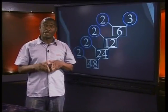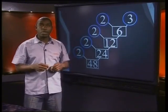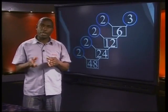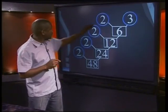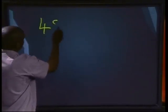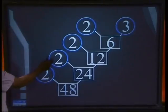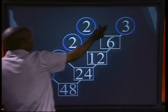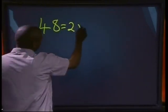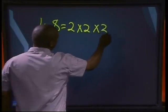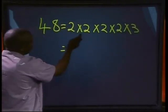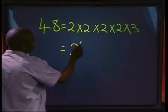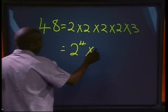All the prime numbers are placed in blue circles. What we did here was to prime factorize 48. Now we'll write 48 as a product of prime factors. 48 can be written as 2 times 2 times 2 times 2 times 3. So how many 2's do we have? 1, 2, 3, 4. So it will be 2 to the power of 4 multiplied by 3.